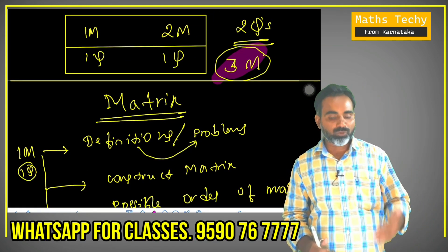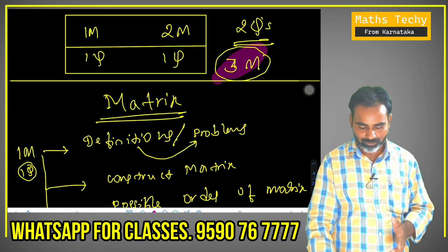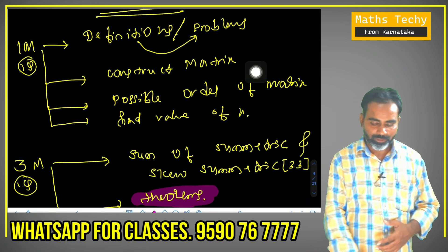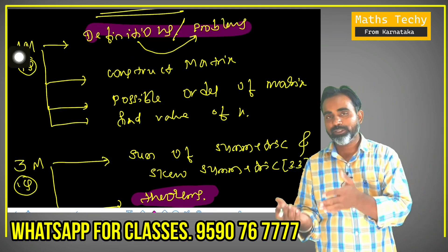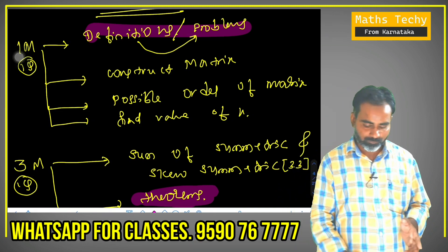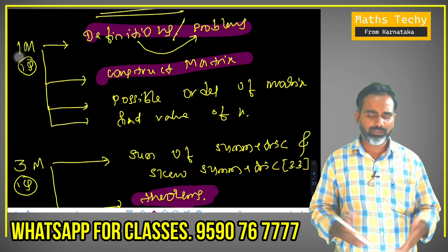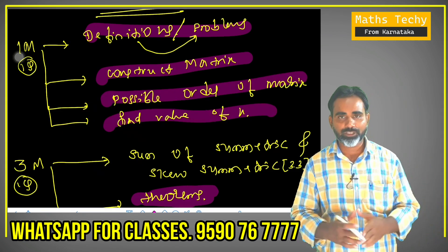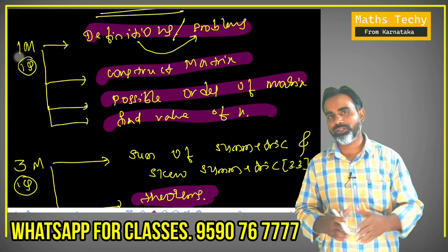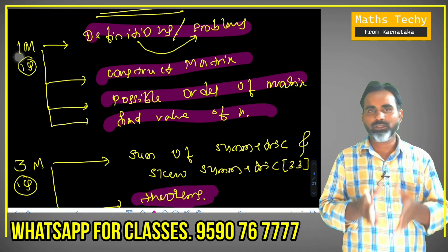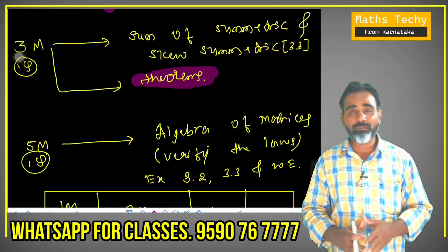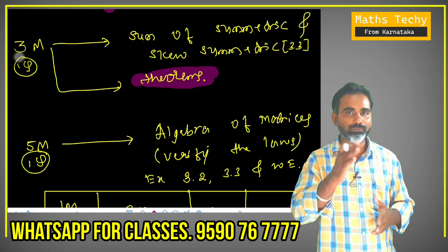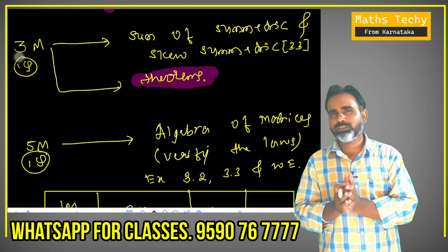It is no 1 mark question — it is made in 2 marks for one question. Totally 3 marks. So let's begin our discussion about matrices. We have definitions — means based on the definition columns, construct matrix: 2×2 or 3×3 matrix, possible order of matrices, find the value of x. This answer is definition-based on the equal matrix in common. Sum of symmetric and skew-symmetric are very common questions, and in the theorem, there is a theorem of symmetric and skew-symmetric concept.